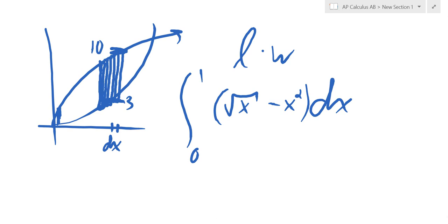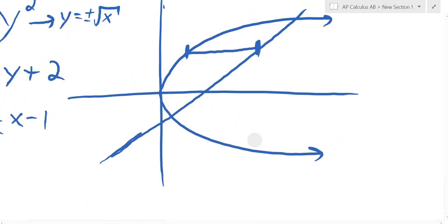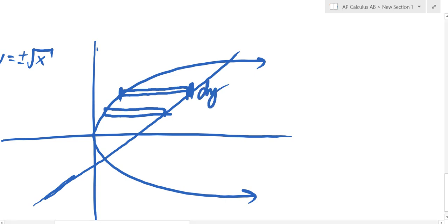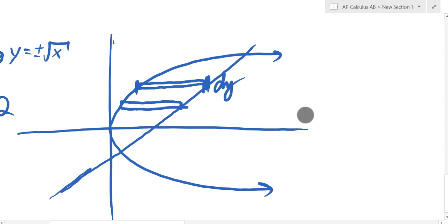Keep that idea in mind because when we do it horizontally, now my rectangles are running left to right. I'm not crushing down the horizontal distance — I'm crushing down the vertical distance. What's the height of every single one of these rectangles going to be if I crush it down infinitely small? dy. I'm crushing it down to dy, which means I'm going to integrate with respect to y. y is my variable now.